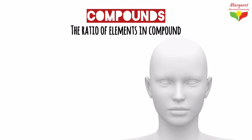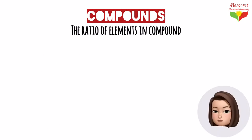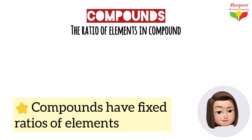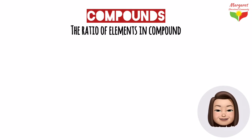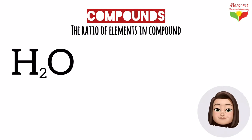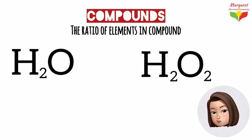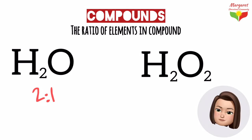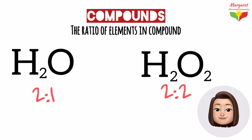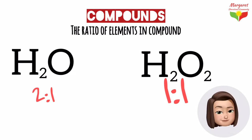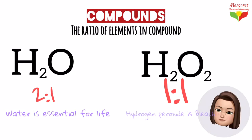A ratio is a way to compare quantities of things. An average human head has two eyes, one nose, one mouth — so the ratio is 2:1:1. Chemical compounds have fixed ratios too. If a sample of a compound has a different ratio, then it cannot be the same compound — it will be another compound. For example, water has the formula H₂O and hydrogen peroxide has the formula H₂O₂. In water, the ratio of hydrogen to oxygen is 2:1. In hydrogen peroxide, the ratio is 2:2, simplified to 1:1. So the ratio is different and the compounds are different — one number makes a big difference. Water is essential for life, while hydrogen peroxide is used as a bleach and has even been used in rocket fuel.